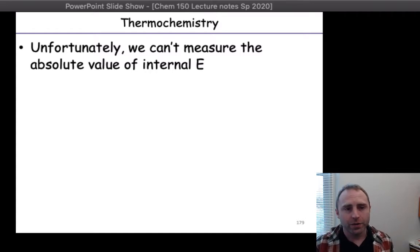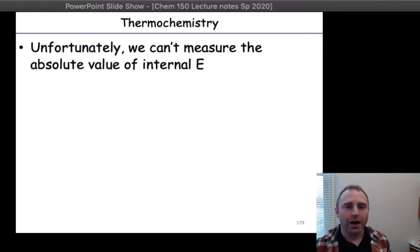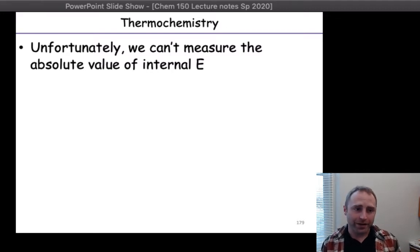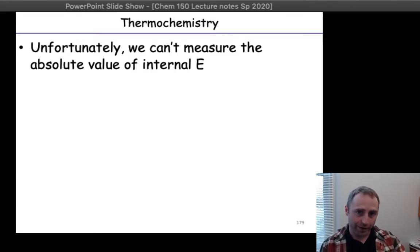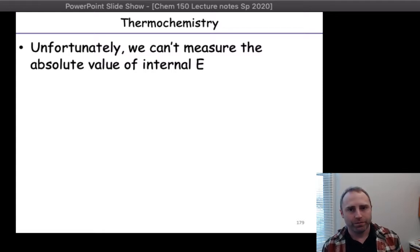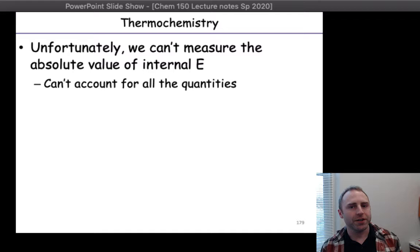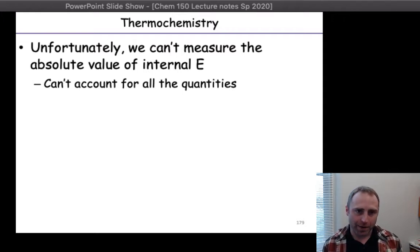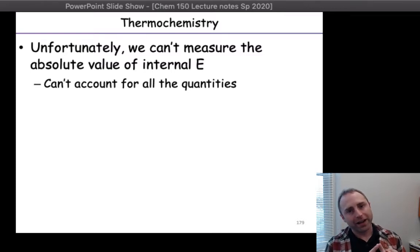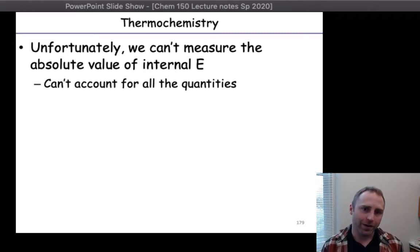Going back to the concept of internal energy — I use U most of the time while your book uses E. For the internal energy of your system, you're not going to be able to stick a probe into something and say 'that is the internal energy of our system.' It doesn't work like that, largely because we can't accurately account for all the different kinds of energy within a system. From last time, we had different kinds of molecular motion, different kinds of electrostatic interactions, and the kinds of interactions that hold protons and neutrons together — you can't get all that information from one probe.